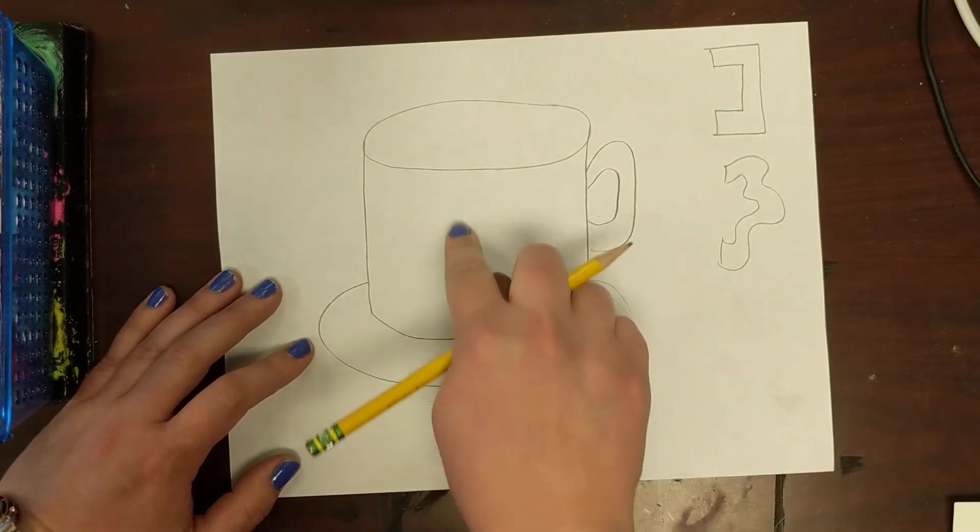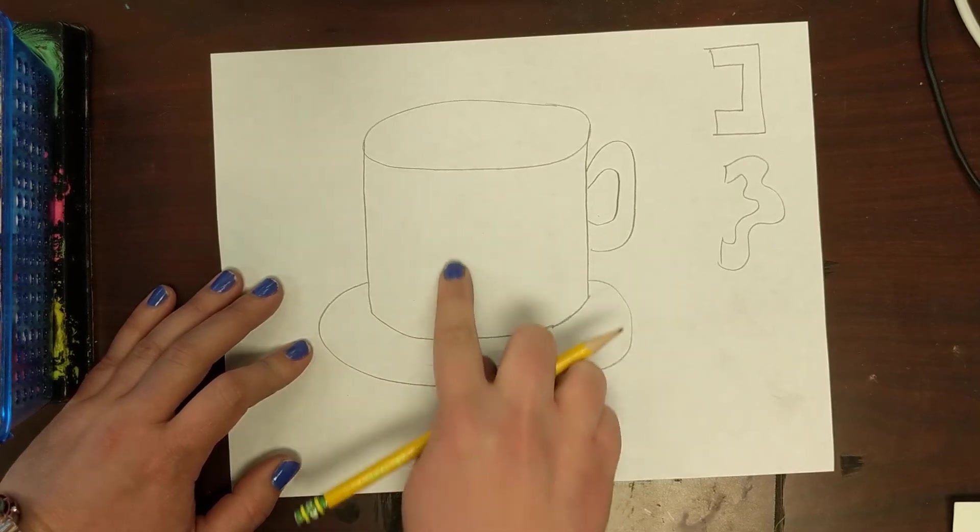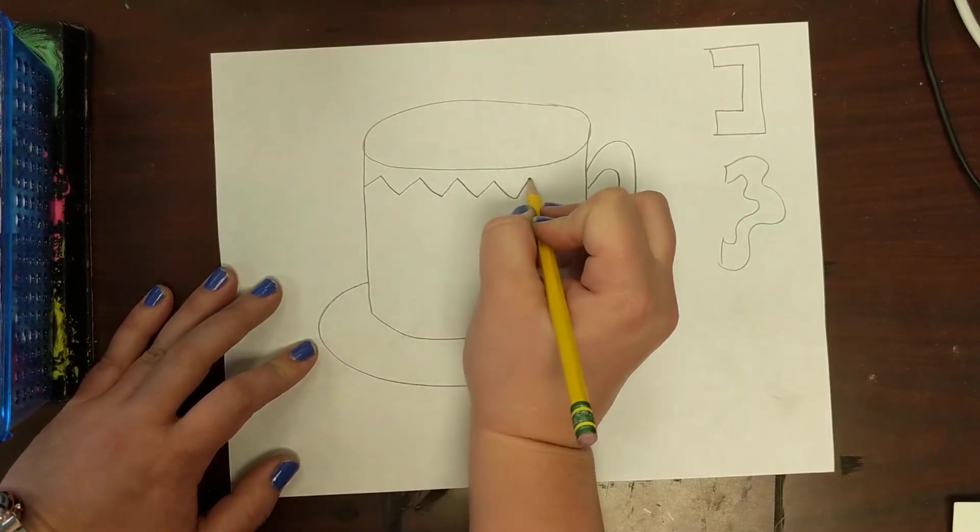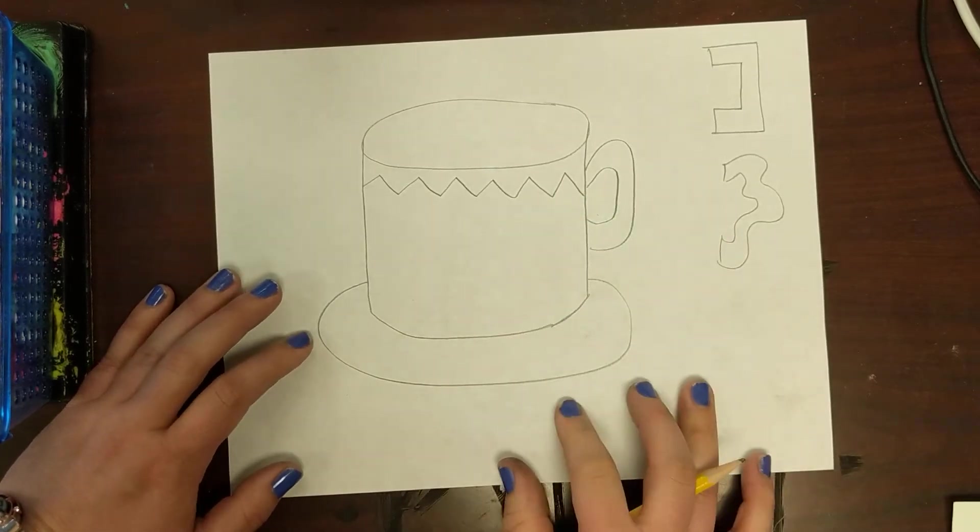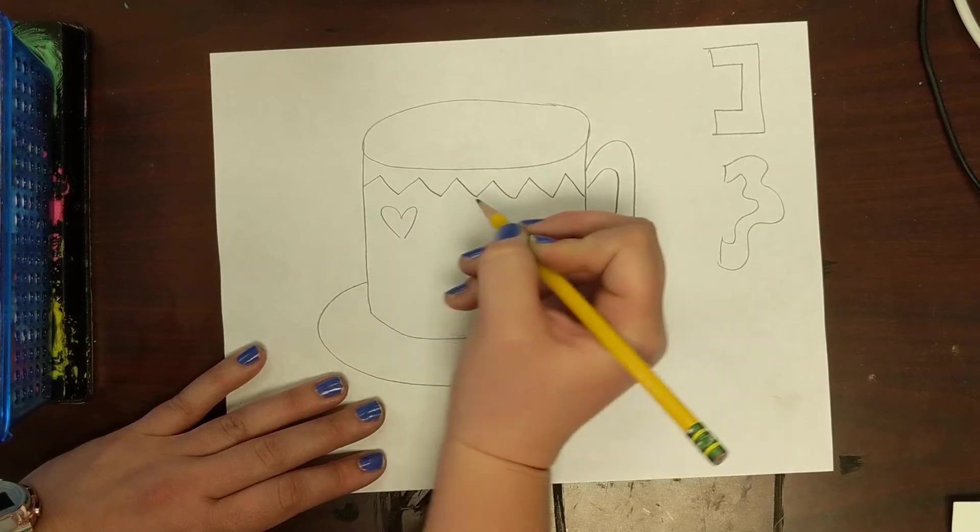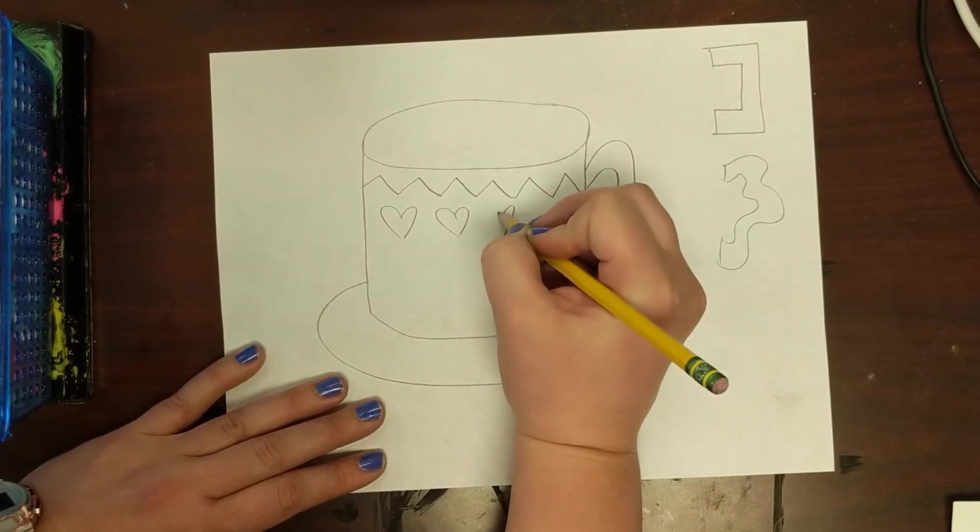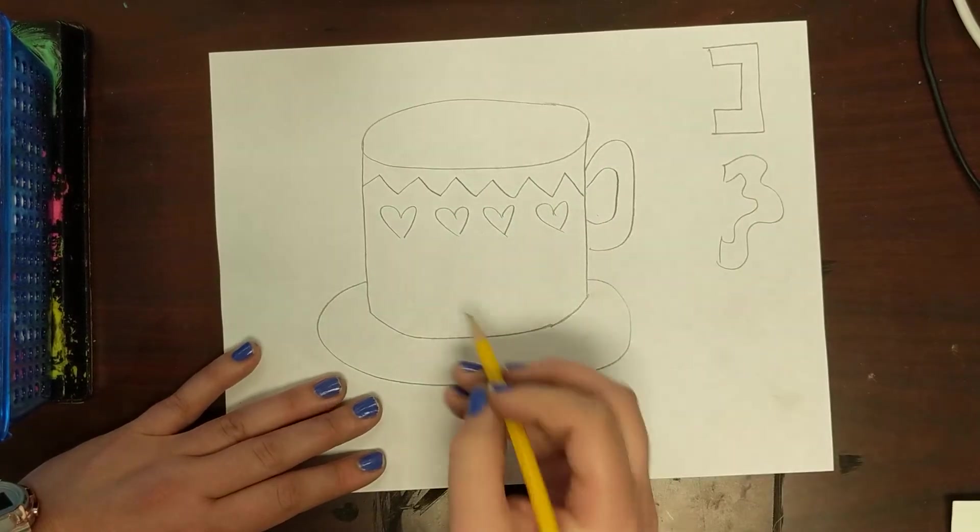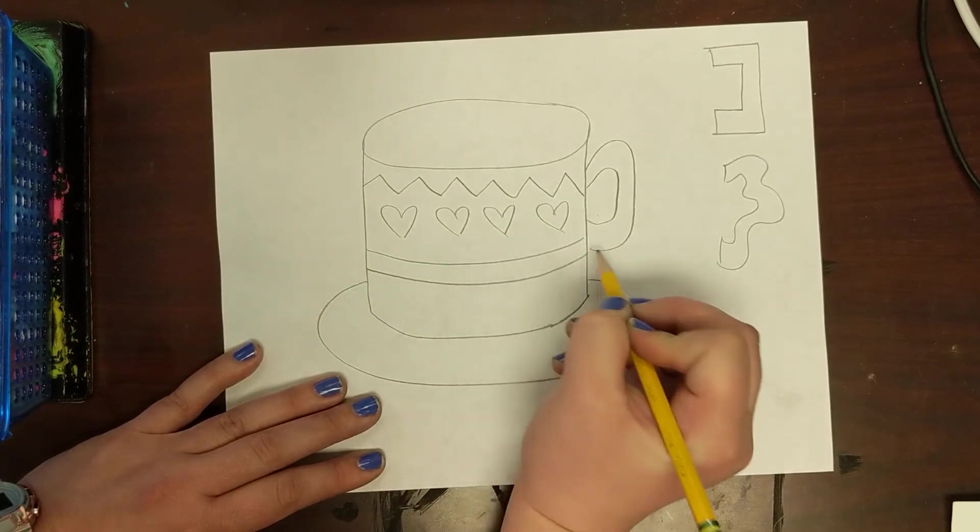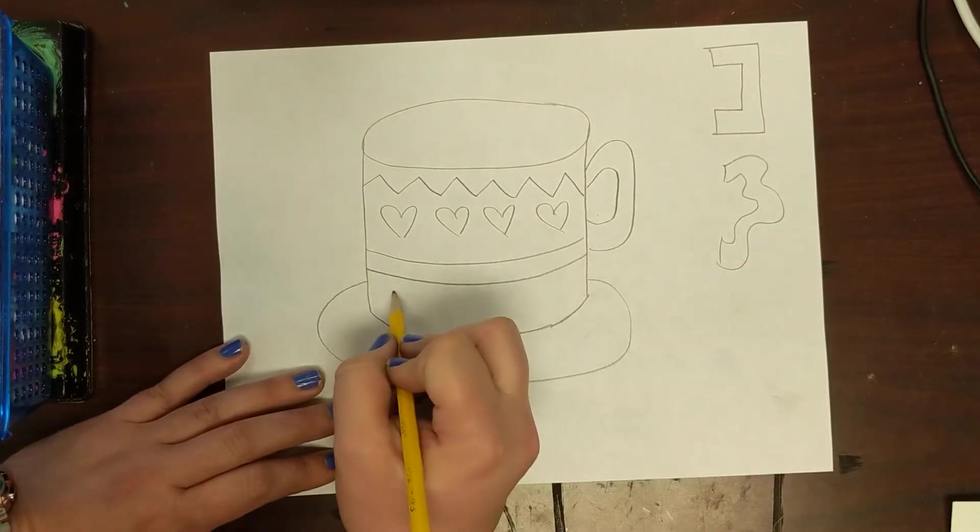So you need at least four or five patterns on your mug, and remember draw them really big and wide. So I'm gonna do, maybe I'll do hearts. Again, don't draw teeny tiny hearts. Maybe I'll do some stripes going around and maybe some dots.